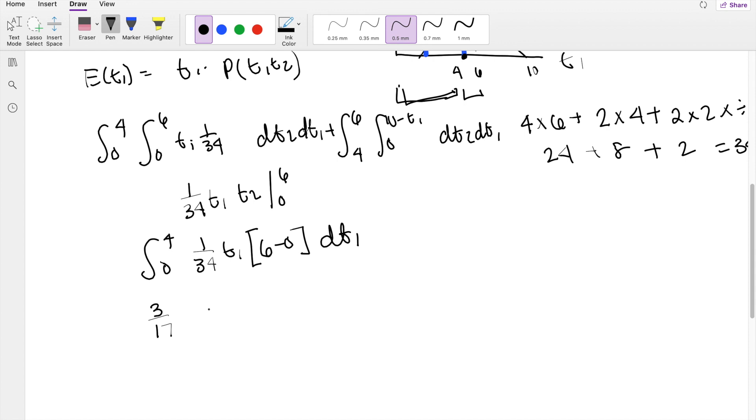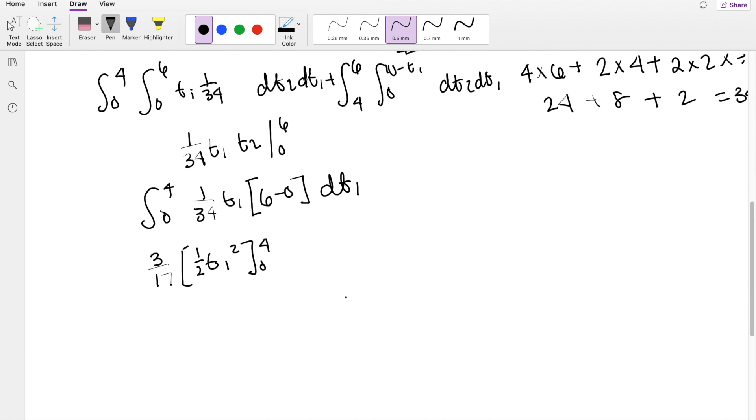Integrating, it's just t1 then. t1 integrating it by itself is t1 squared over 2, going from 0 to 4. The lower limit just gives you 0, so then just plugging in the upper limit, you get 3 over 17. 4 squared is 16 over 2, that's 8. So then this is equal to 24 over 17.